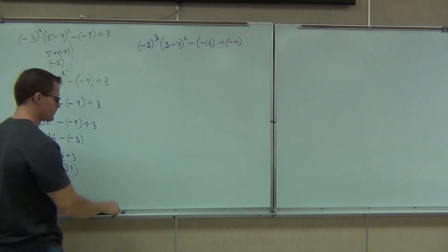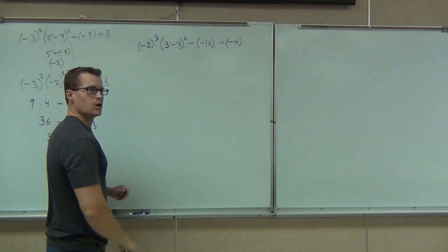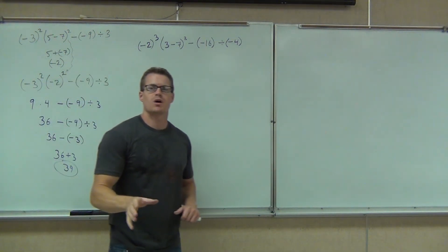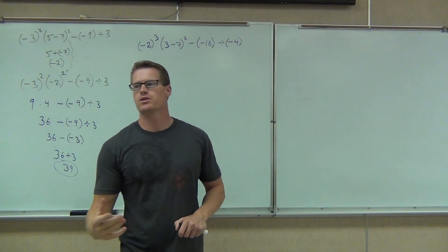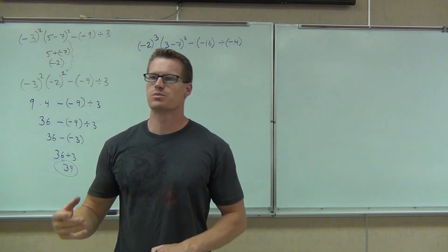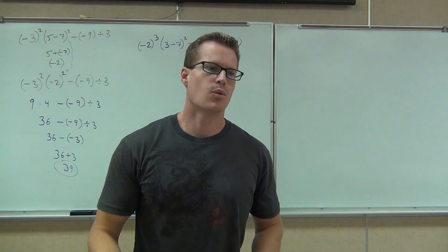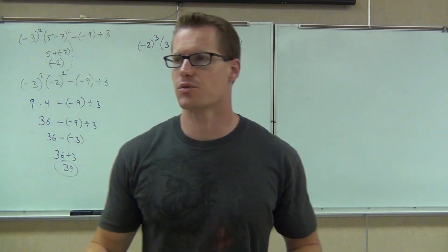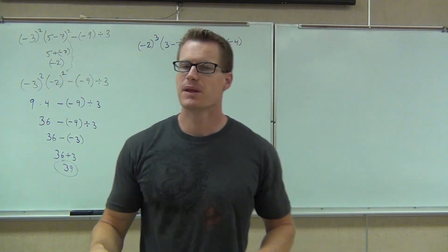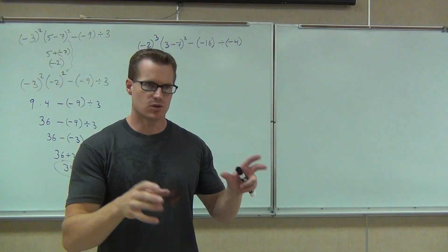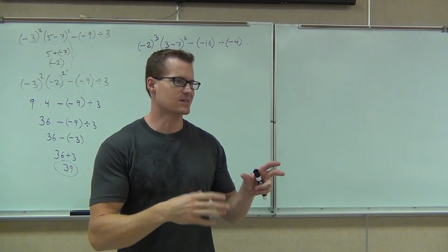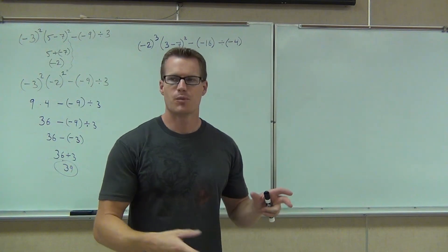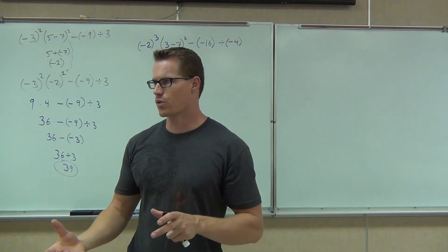All right, so here we go. When you're doing this problem, the appropriate thing to do first is, of course, the parentheses. We're going to look at that, do it off to the side, do the 3 minus 7. Any way that you'd like to do that, I'd like to see some work on it, but you're going to get negative 4 out of that.